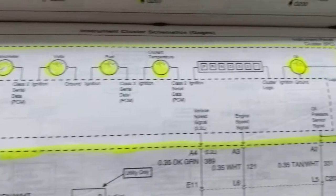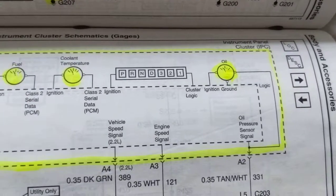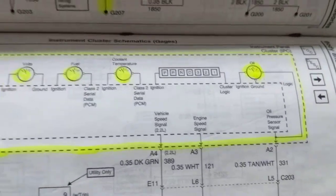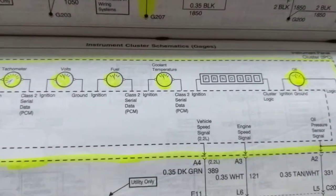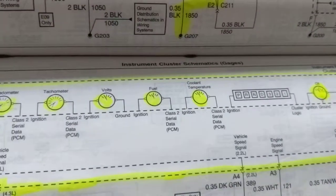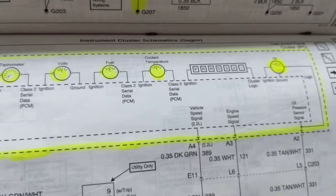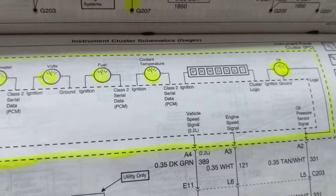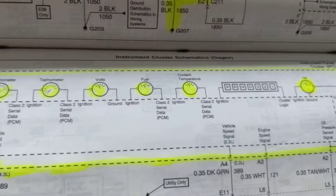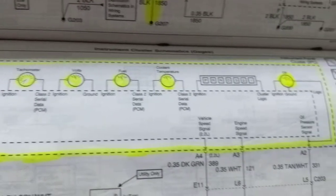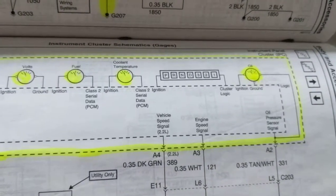So usually when the gauges fail, sometimes there's a stepper motor inside the instrument cluster, which is not easy to take out. You have to be careful how you do that. But usually that's what goes wrong, or the sensor is bad, like the oil pressure sensor or different things.